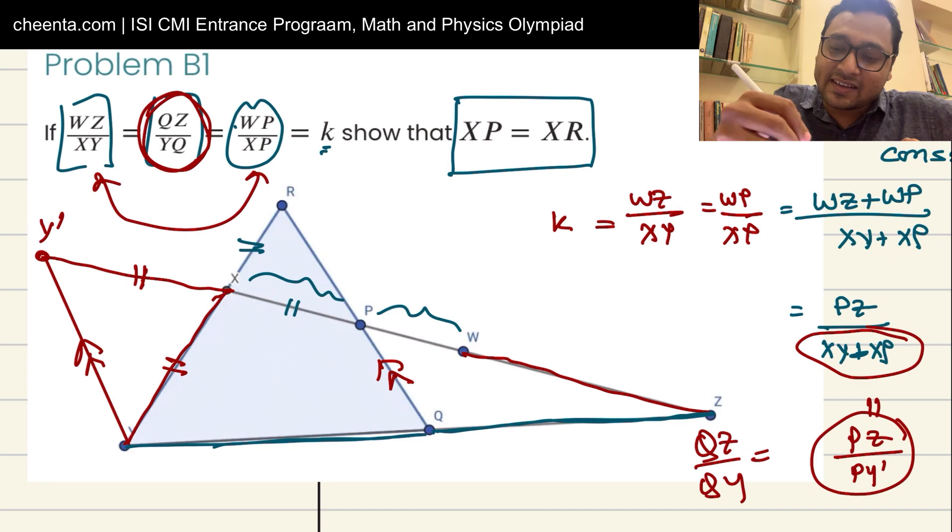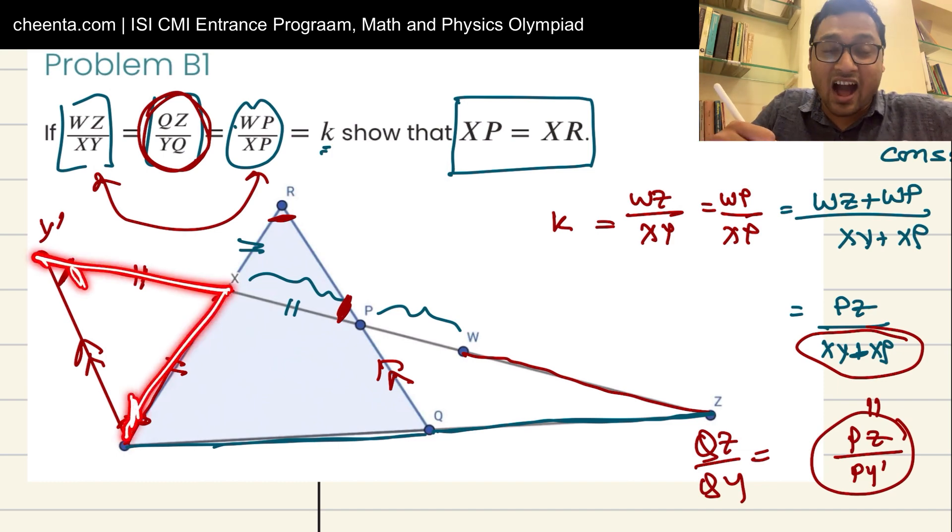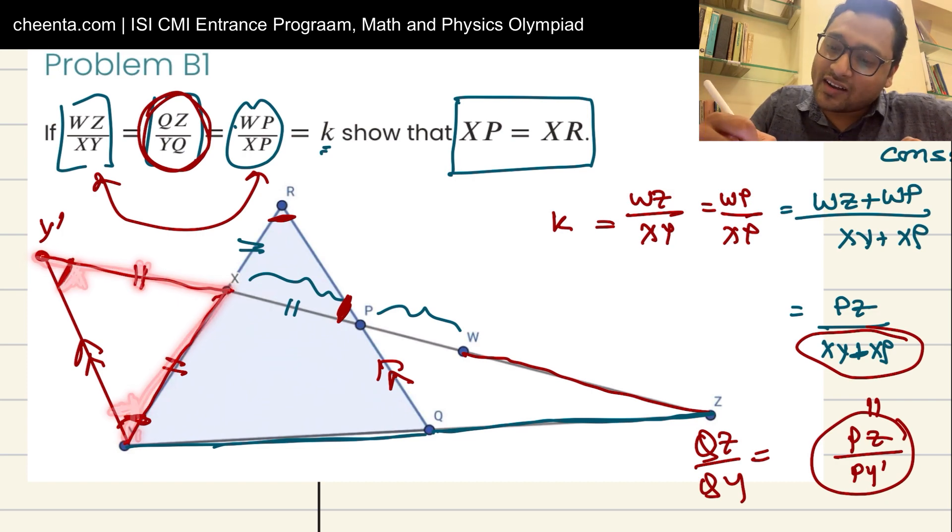Which basically means that this angle is equal to this one, and this angle is equal to this one. But these two angles are equal because XY prime and XY are equal. That's how we constructed it. That was the construction. So these two angles must be equal. Therefore these two angles are equal and we have XP is equal to XR.